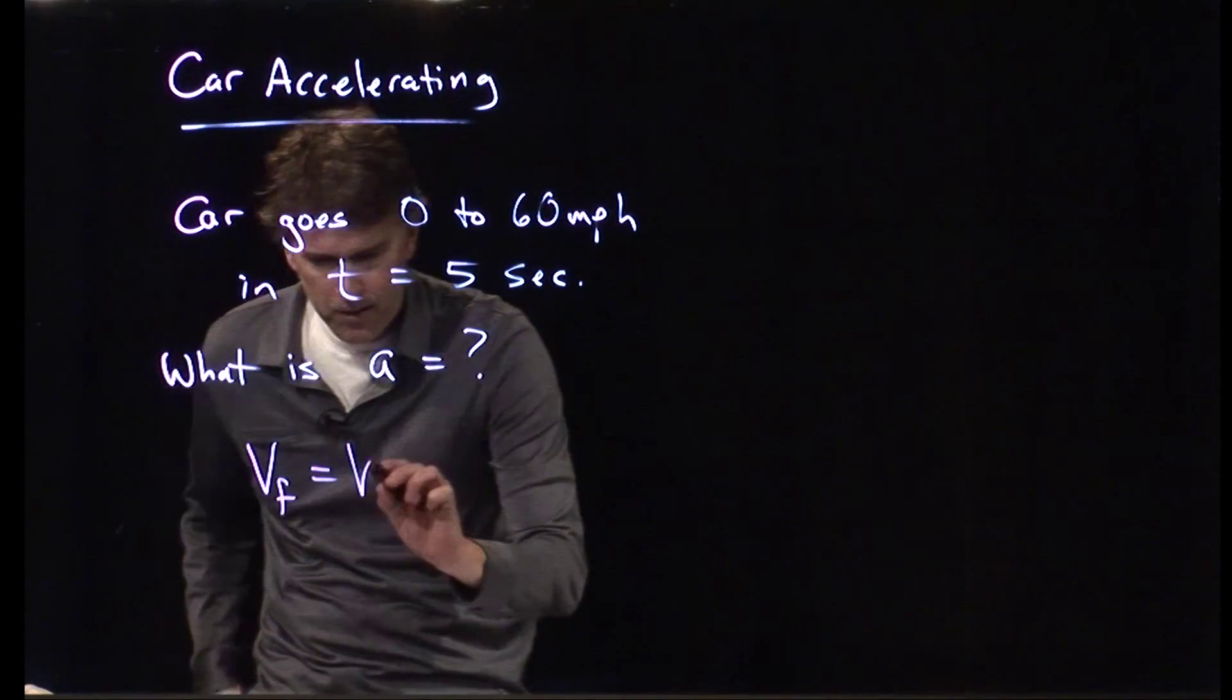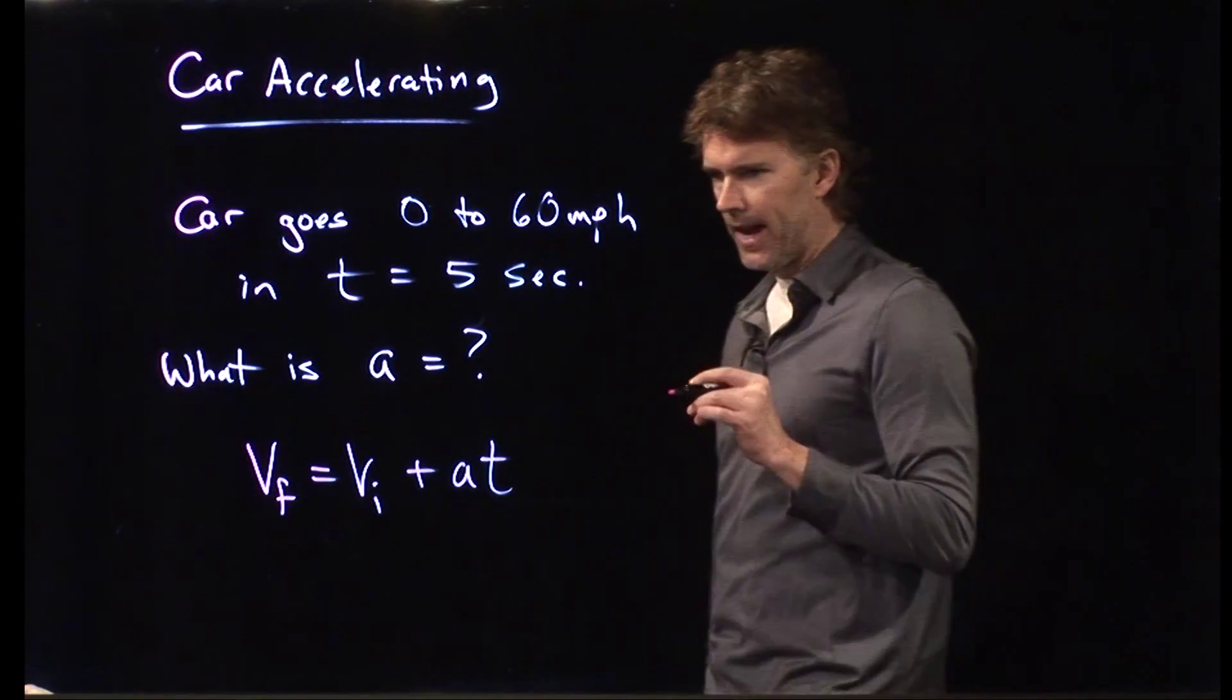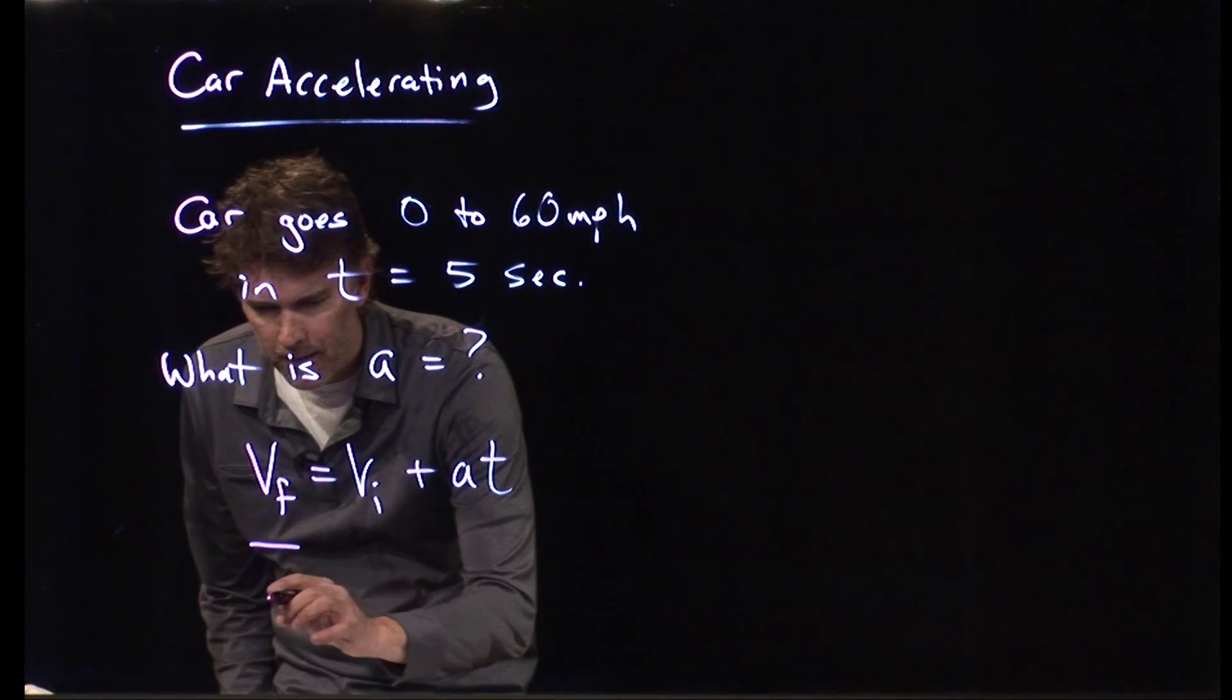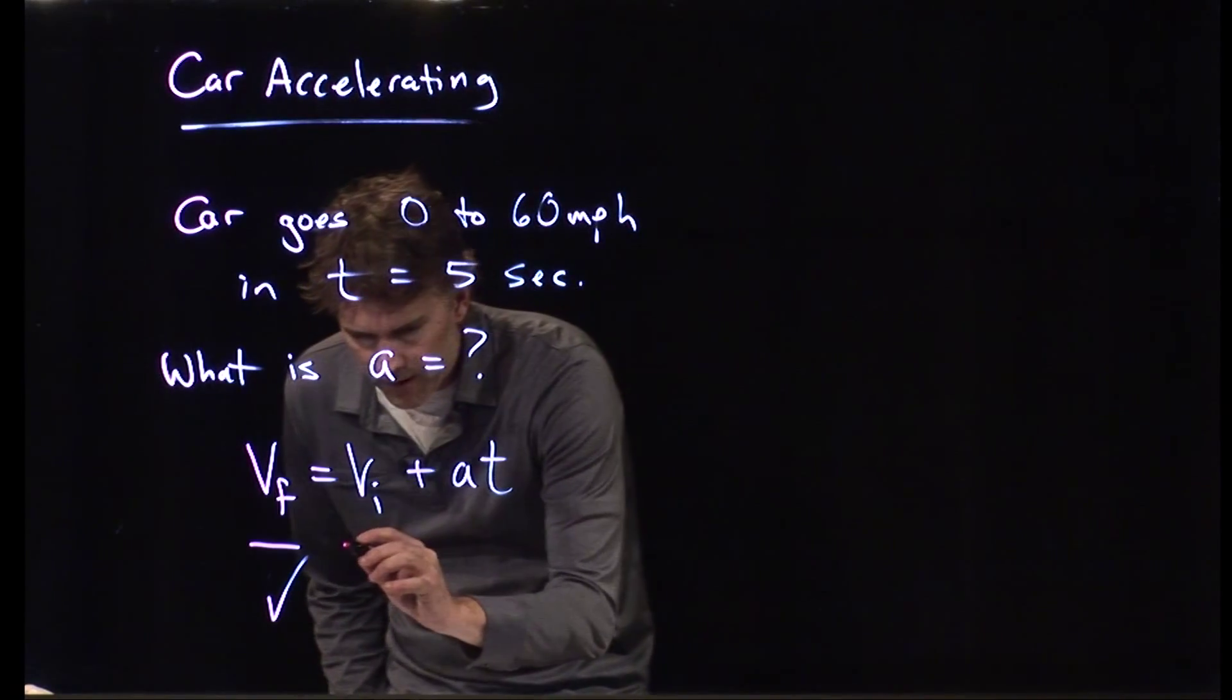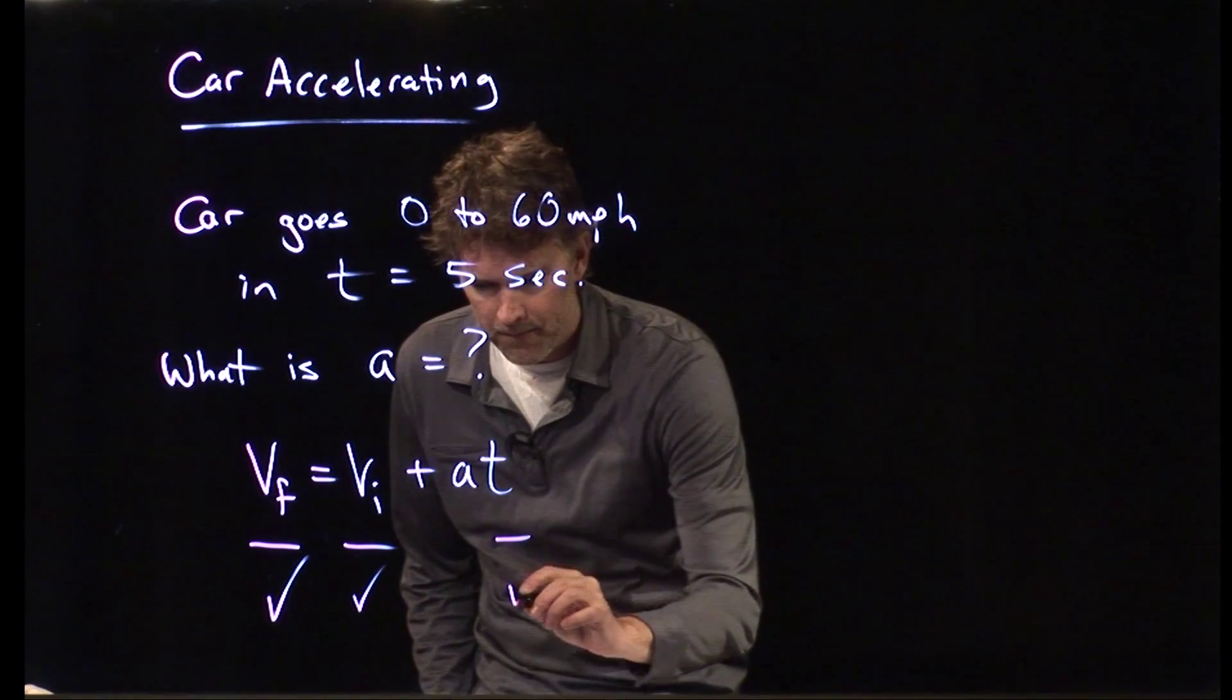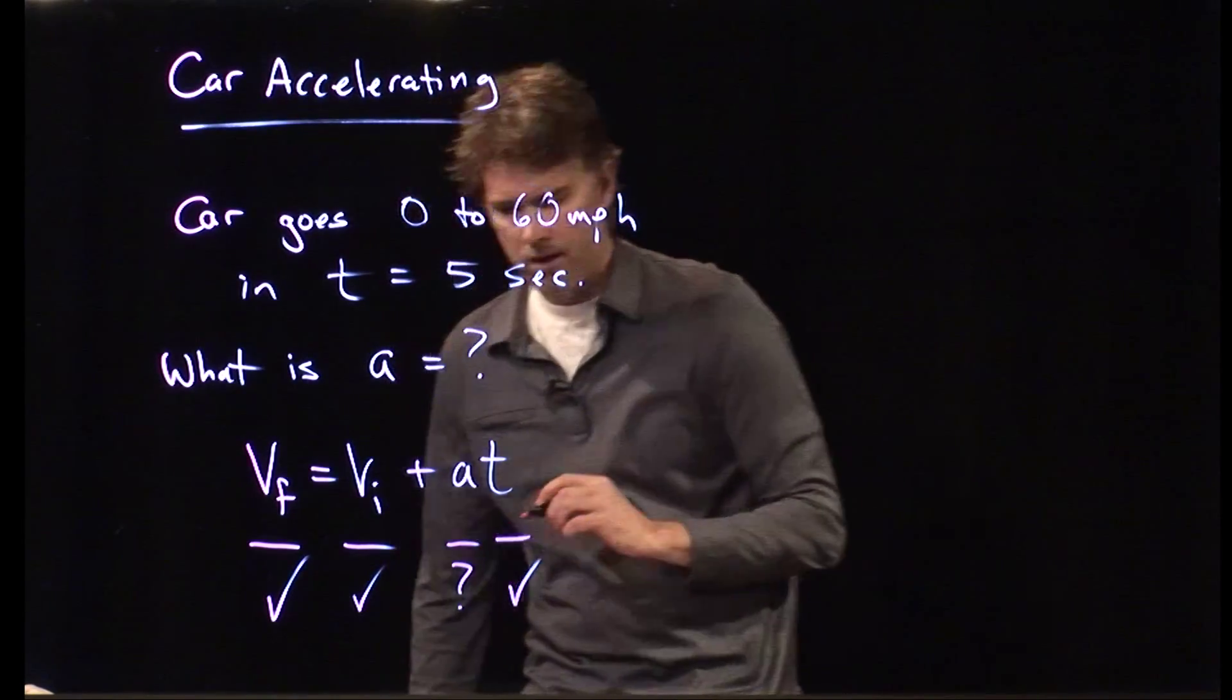VF equals VI plus AT. That's one of the kinematic equations. Is that going to help us figure this out? Maybe. We know this number right here, V final, that's 60 miles per hour. We know this number, that is 0. And we know time, five seconds. What we don't know is acceleration, and that's exactly what we're looking for.